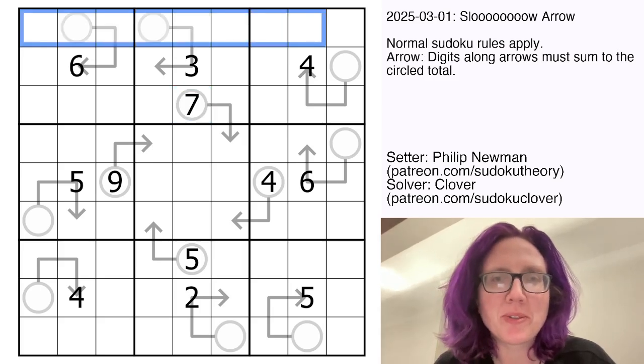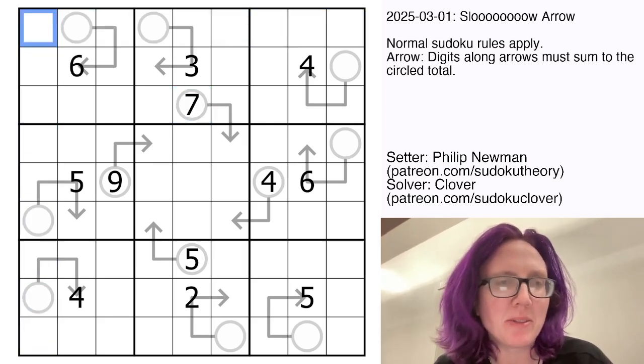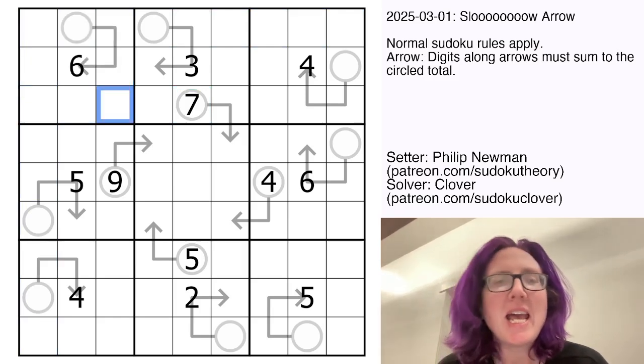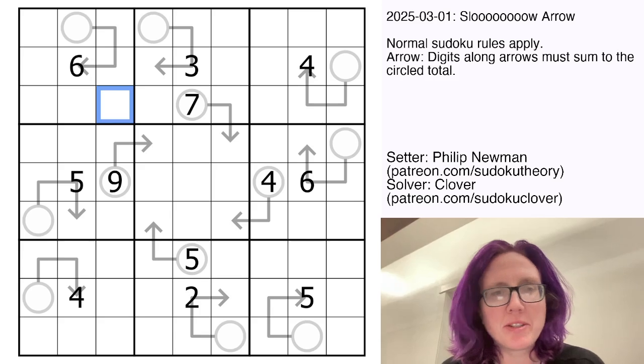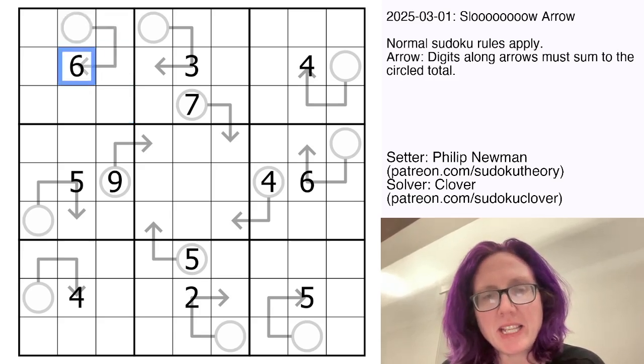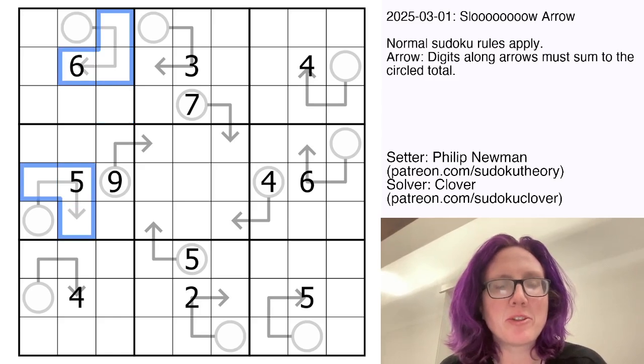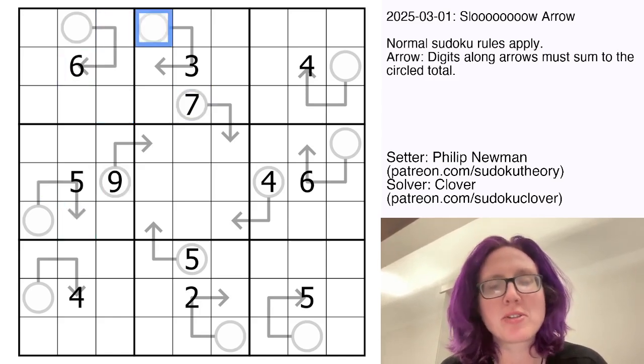So we're placing the digits one through nine, once each, in each row, each column, and each outlined three by three region. In addition to that, we have some arrows in the grid, and the way these work is that the digits along the arrow have to sum to whatever number is in the attached circle.